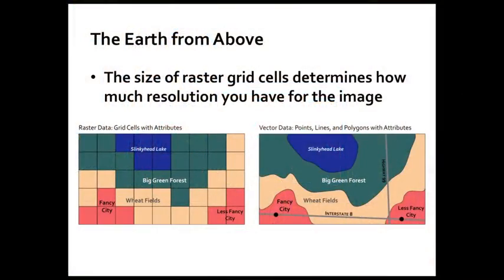Here you can see a graphic showing a fake example of vector data versus raster data for the same place. I've created a fake geography with Fancy City, Less Fancy City, Slinky Head Lake, Big Green Forest, Wheat Fields, and so on. On the left, you can see rather large regular-sized grid cells with values assigned to them — that's a very coarse resolution image of the fake landscape. On the right, you have much more detailed vector geometry. Vectors allow you to be much more precise about boundaries because you're not limited to the resolution of a sensor.